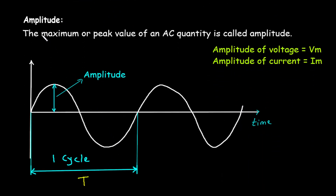Next is amplitude. The maximum or peak value of an AC quantity is called amplitude. As we can see, for this waveform this is the maximum or peak value. It is represented by Vm for maximum voltage and Im for maximum current.